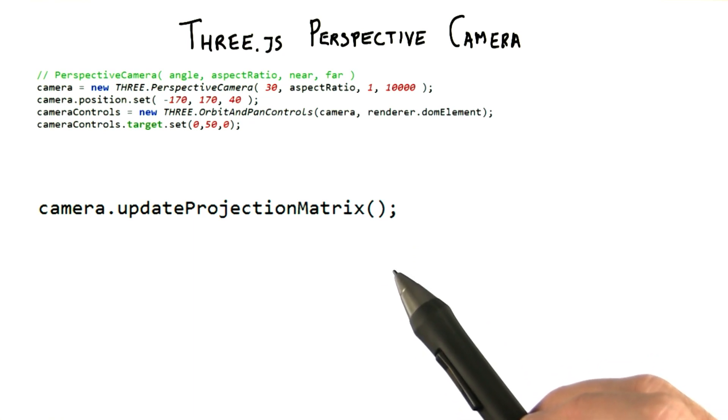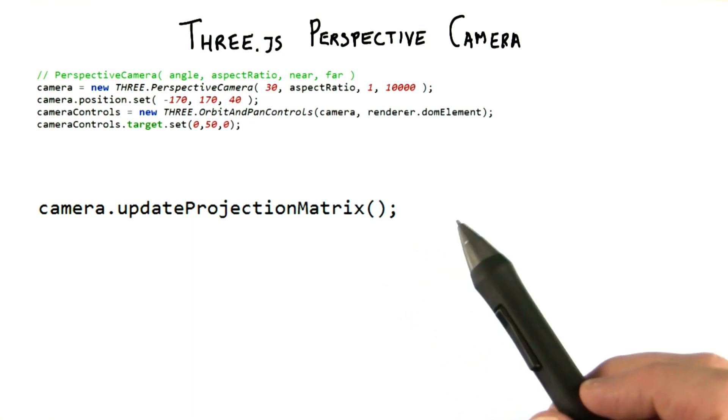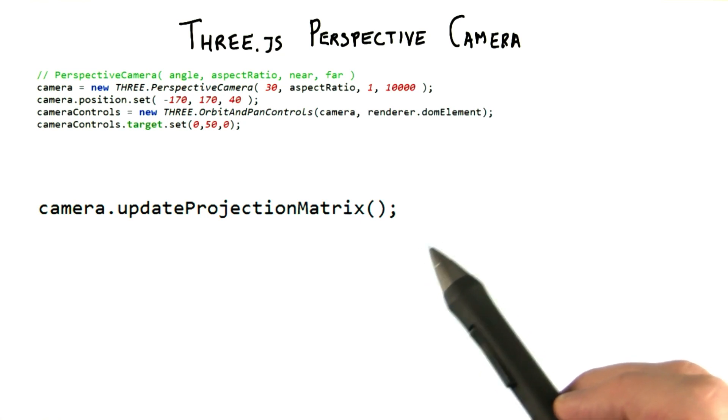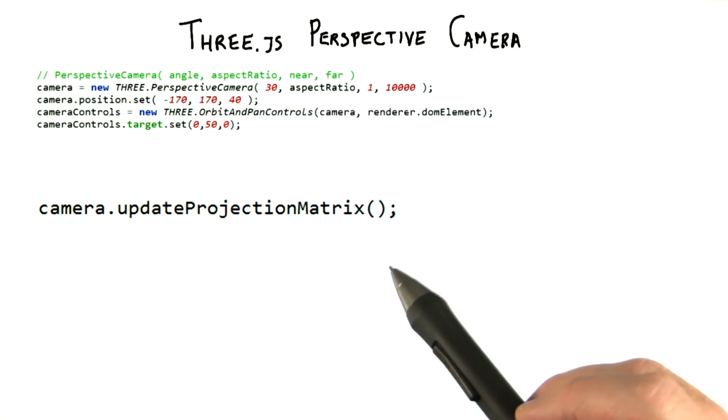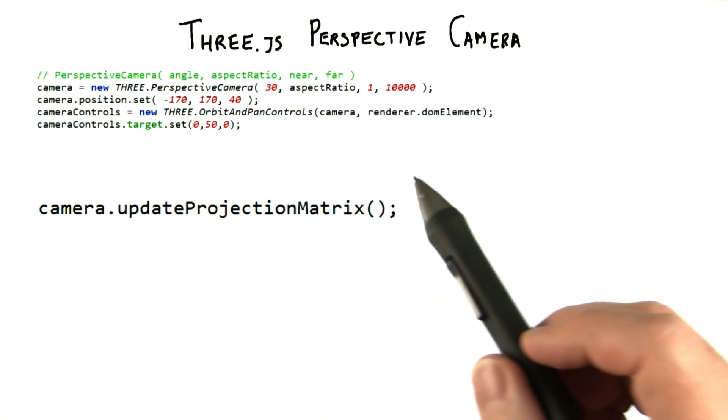For most demos, these camera parameters are usually set once on creation and rarely touched, so Three.js doesn't spend any time checking them each frame. If you change these values while running your program, calling updateProjectionMatrix has Three.js evaluate these parameters and form a new projection matrix.